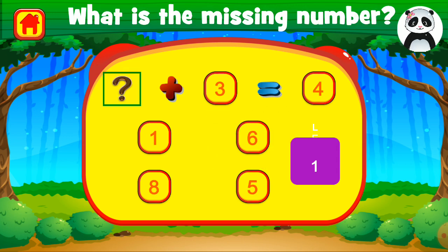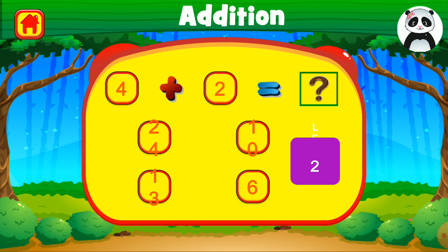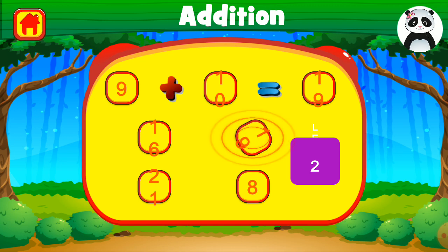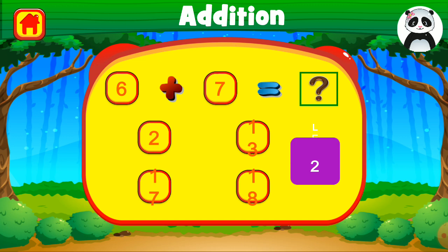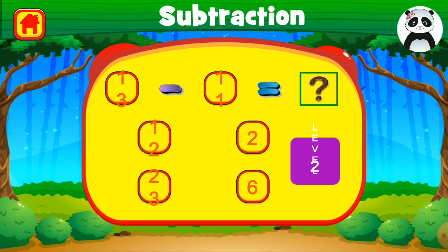What is the missing number? Missing number is 1. 1 plus 3 is 4. Well done. 4 plus 2 equals 6. Terrific. 9 plus 10 equals 19. Well done. 6 plus 7 equals 13. Well done. What is the missing number? Missing number is 13. Excellent. 13 minus 11 equals 2. Well done.